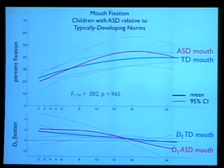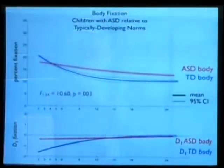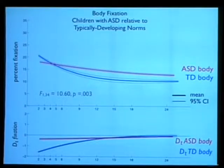For mouths, we don't have a difference. We did some work last year on biological motion. Our hypothesis is that even though those curves reflect the same percent fixation, it's actually doing something very different for typical children than for children with autism. With body fixation, there is a very dramatic decrease in body fixation in typical children.